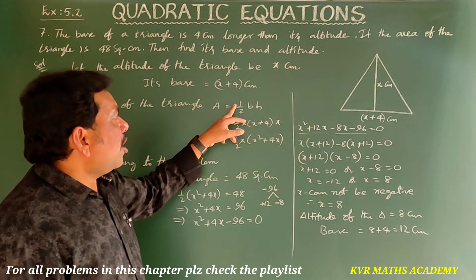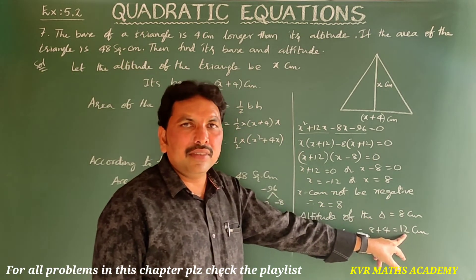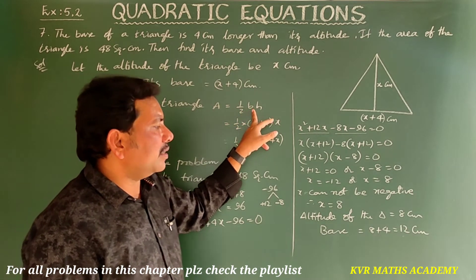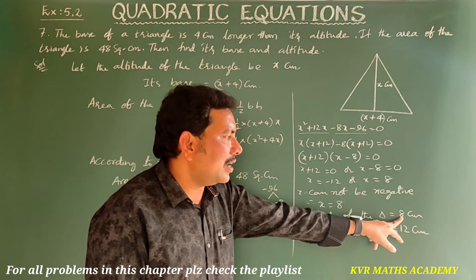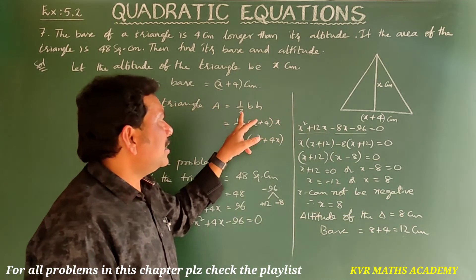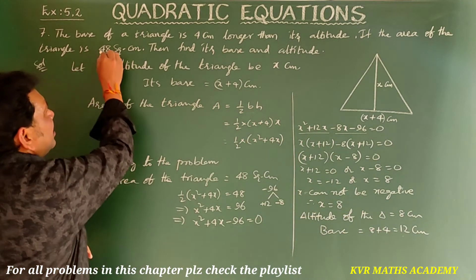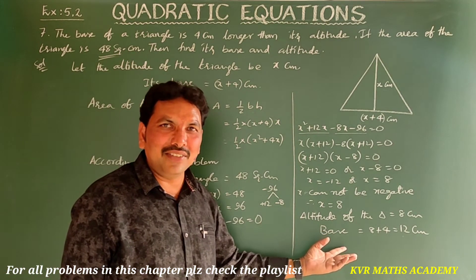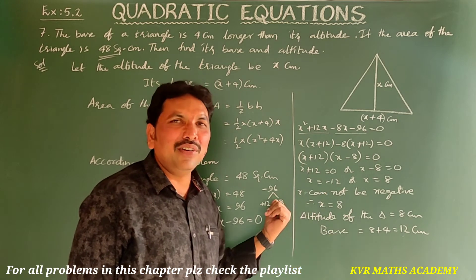The base is x plus 4 = 8 plus 4 = 12 centimeters. Verification: half times base times height = half times 12 times 8 = 96 divided by 2 = 48 square centimeters, which matches the given area. Correct!